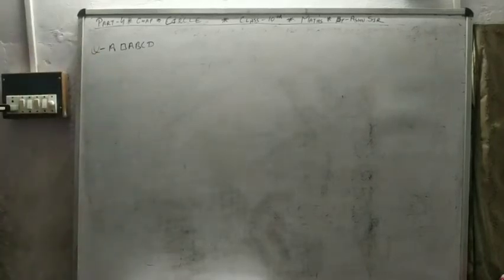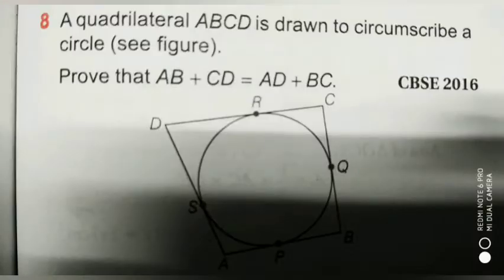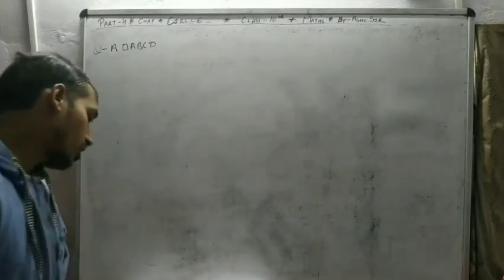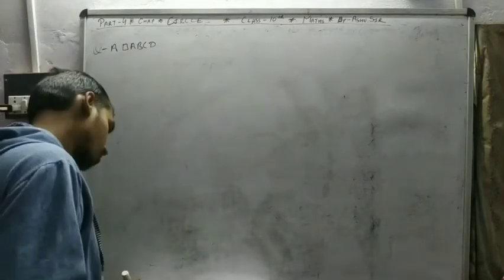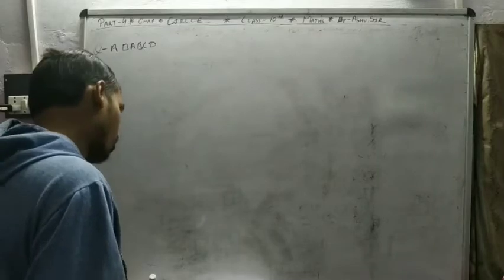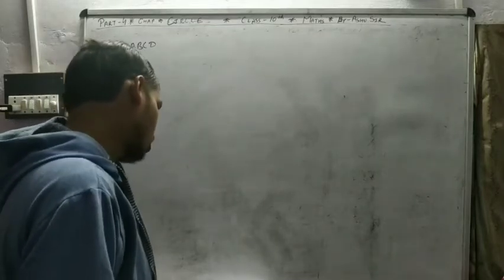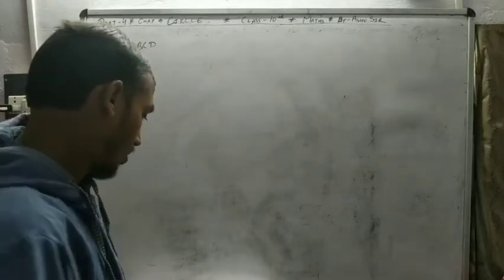So let's see the next question — first you read the question. The question is: quadrilateral ABCD is drawn circumscribing a circle. Prove that AB plus CD is equal to AD plus BC.